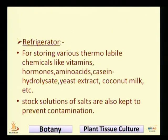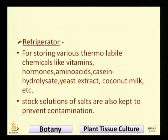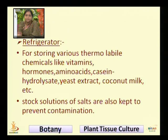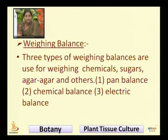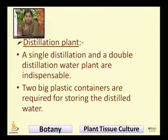The refrigerator stores thermolabile chemicals like vitamins, hormones, amino acids, casein hydrolysate, yeast extract, coconut milk, etc. Stock solutions of salts are also kept in it to prevent contamination. For weighing, there are three types of weighing balance used in the laboratory: the pan balance, the chemical balance, and the electric balance.